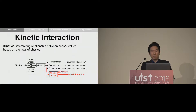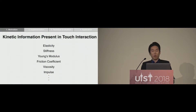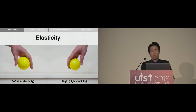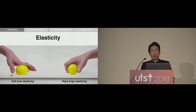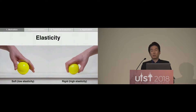This research aimed to propose a new touch technique that utilizes kinetic information. Kinetic information that exists during touch interaction includes elasticity, stiffness, Young's modulus, friction coefficient, viscosity, and impulse. Among them, the touch technique proposed in this study aimed to measure and utilize the elasticity of the ND vector in touch interaction.